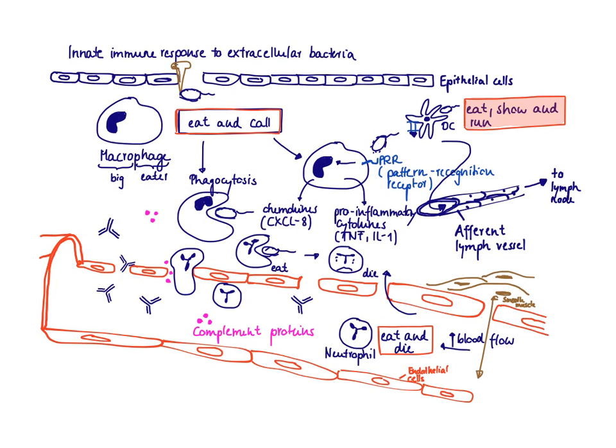Remember, cells don't have hands to show things, so they use MHC class 2. And then they are running off into the afferent lymph vessel, which drains into the lymph node. And so the dendritic cell takes kind of a snapshot of what is happening at the site of infection and then is off to the lymph node.